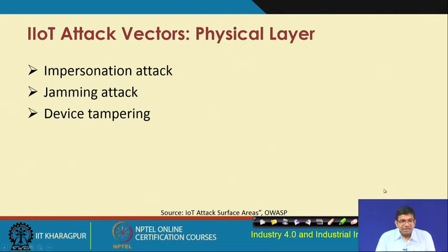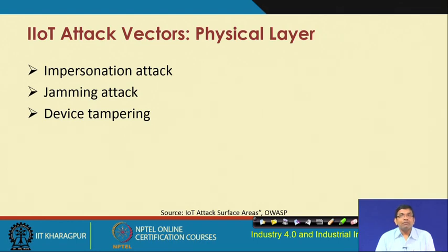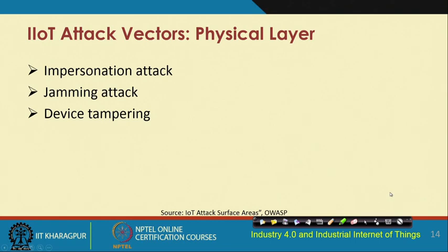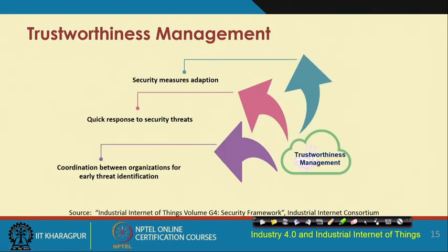At the physical layer, possible attacks include impersonation attacks, jamming attacks, and device tampering attacks. Jamming attacks are particularly prevalent and serious in IIoT and IoT — a high-power jammer sending strong signals can cripple the functioning of the highly constrained network and system.